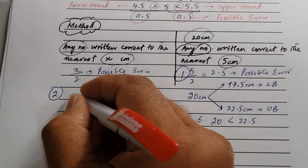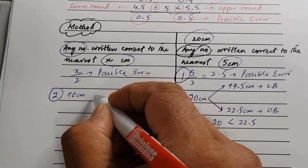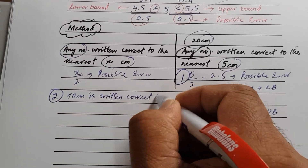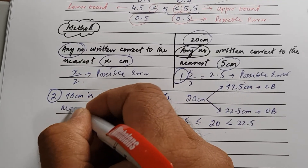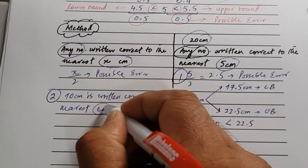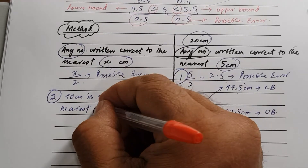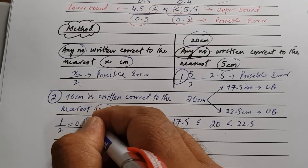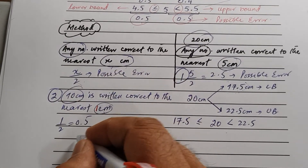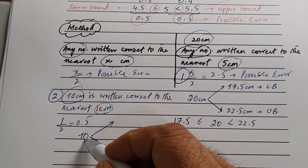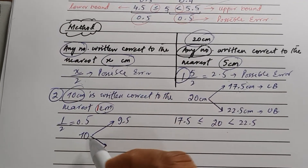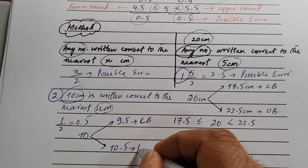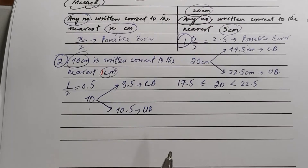Example 2: 10 centimeters written correct to the nearest centimeter. Here the nearest unit is 1, so possible error = 1 ÷ 2 = 0.5. Lower bound = 10 − 0.5 = 9.5, upper bound = 10 + 0.5 = 10.5. So 9.5 is the lower bound and 10.5 is the upper bound.